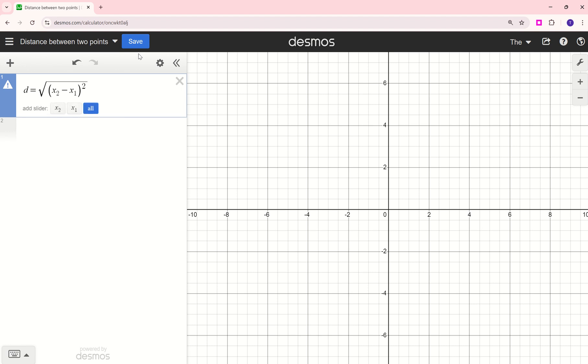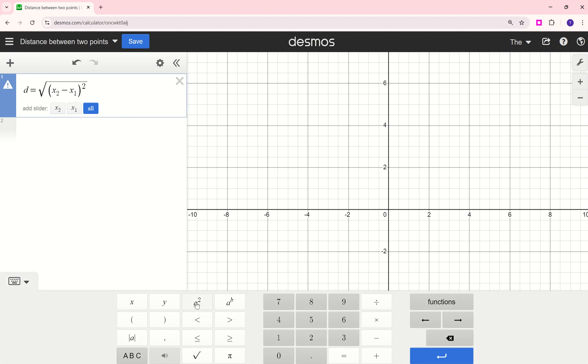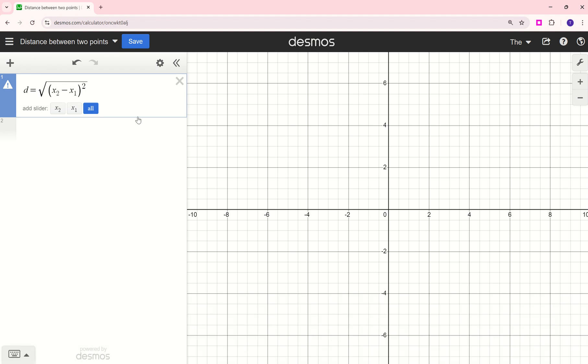So from the first ordered pair the other X value squared. To hit squared I hit shift 6 on my keyboard or you can use this squared button, this A squared button. I'm moving my arrow to the right to come back down out of the exponent plus, and I'm going to repeat y sub 2 minus y sub 1. Again I'm just hitting the number 1 or 2 and Desmos knows to create that subscript, and again squaring that term. So here is the distance formula.